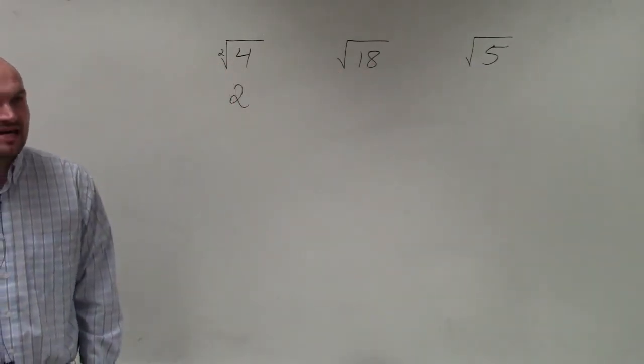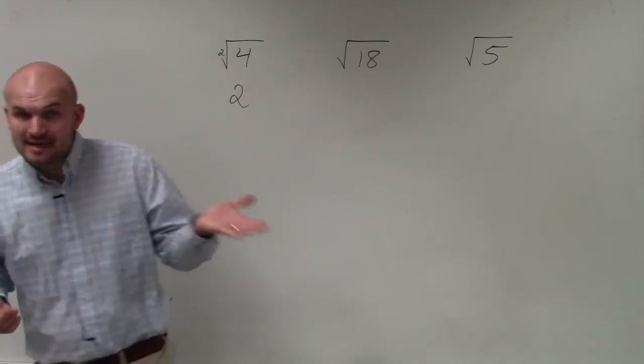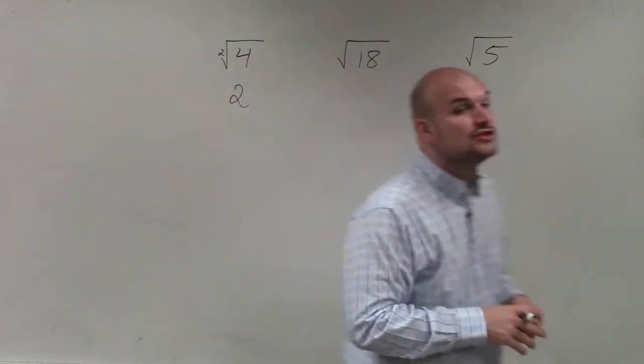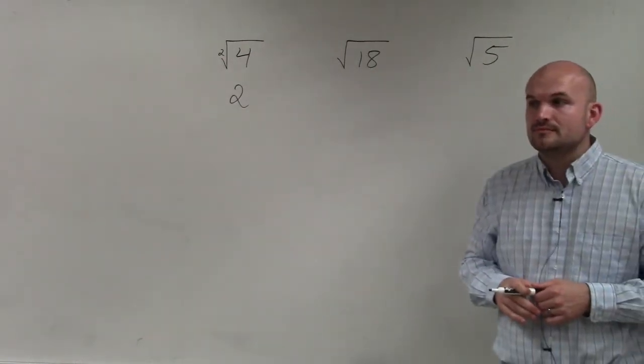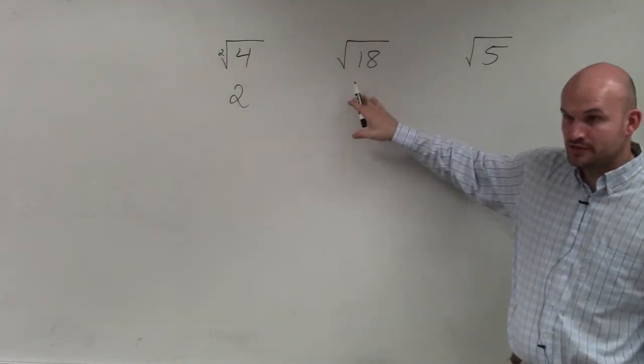We know 4 times 4 is 16 and 5 times 5 is 25. So there are two different ways you could do this: you could use the factor tree, which factors down the problem, or the other way we're going to learn in this class.